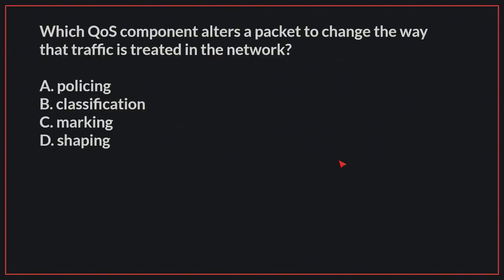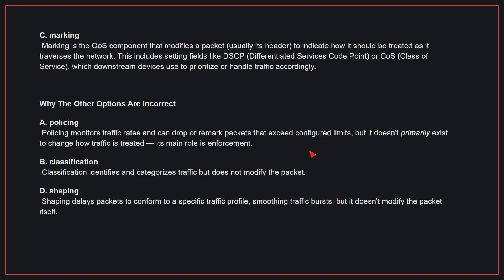Which QoS component alters a packet to change the way that traffic is treated in the network? The correct answer is C. Marking is the QoS component that modifies a packet to indicate how it should be treated as it traverses the network. This includes setting fields like DSCP or CoS, which downstream devices use to prioritize or handle traffic accordingly.